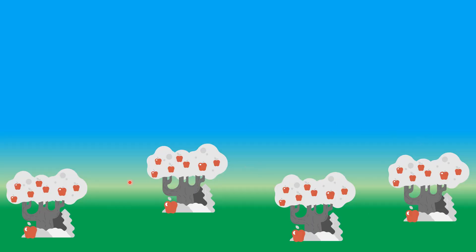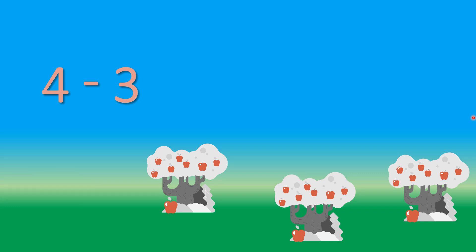Apple trees. Let's count — how many trees are there? 1, 2, 3, 4. 4 trees. We will write 4. Then this symbol is minus. Minus means take away. So 3 will go away — 3 trees disappeared. 1 tree disappeared, 2 trees disappeared, 3 trees disappeared.